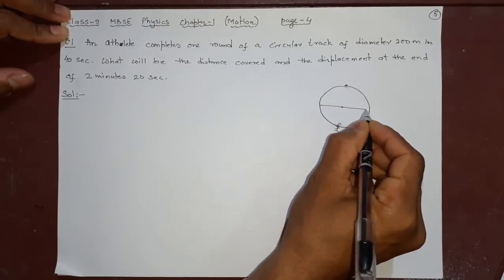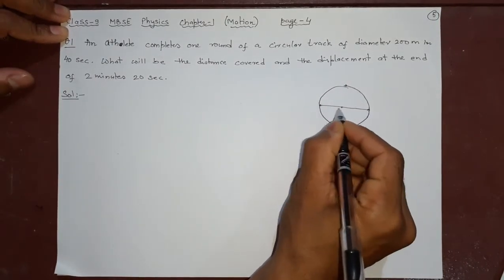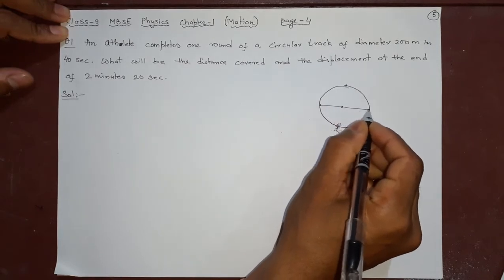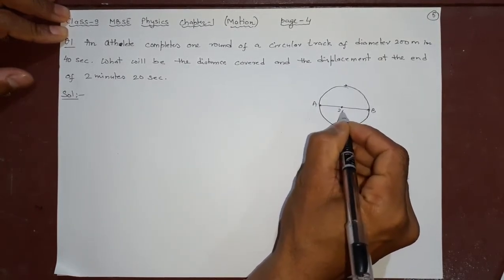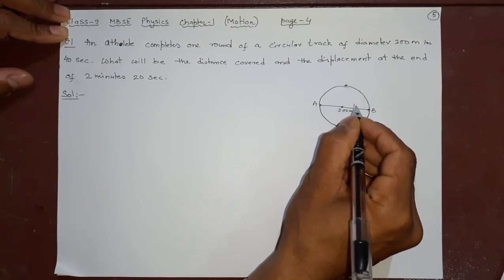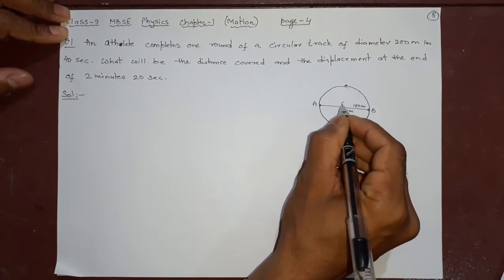Of diameter 200 meters. Diameter means this region, this distance from the center. It has to pass through a circle. This distance is called diameter. Suppose this AB is 200 meters, its radius will be 100 meters. The center is O.